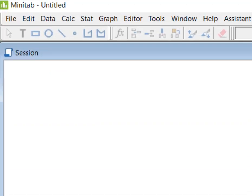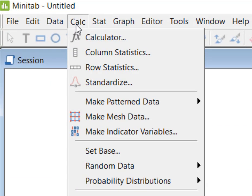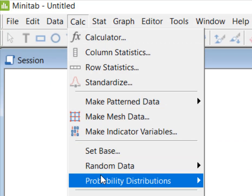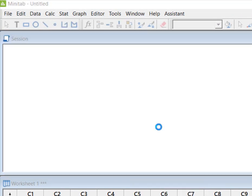Alright, so I'm here in Minitab. I'm going to come up to the Calc menu, come down to Probability Distributions and select Normal.